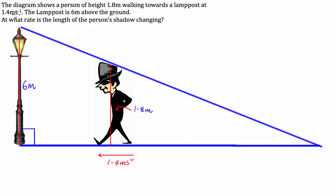So at what rate is the length of the person's shadow changing? The shadow cast by this guy who's walking towards the lamppost is going to be from where he is to the end of the big triangle. And let's denote that S, so S for shadow.